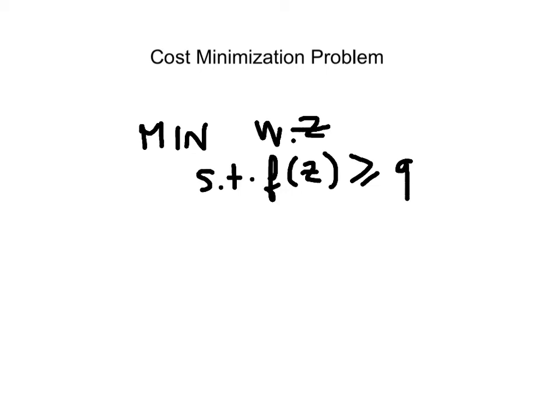I solve this and the solution is the conditional factor demand, Z*, which is a function of price and output level. You can think of this as an input vector producing at least Q units of output.